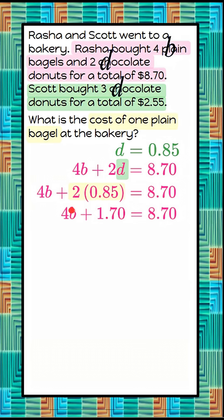To solve, I want to get the variable term alone. I'm going to subtract each side by $1.70, leaving me 4B is equal to $7. I'm going to divide both sides by 4 to solve for B, which is $1.75.